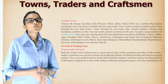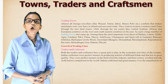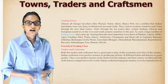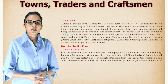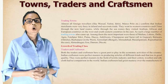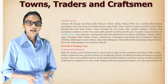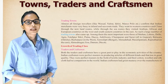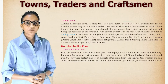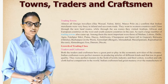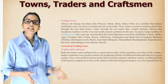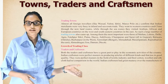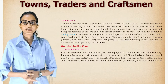Among the most important trading towns were Multan, Lahore, Delhi, Agra, Fatehpur Sikri, Patna, Dhaka, Anhilwada, Champaner, and Surat — all in Gujarat — Balasore in Odisha, Burhanpur in the west, Tamralipti in Bengal, Ahmedabad, Masulipatnam, Rajahmundry in the east, and Ahmadnagar, Goa, Daman, and Diu.